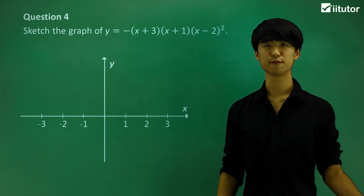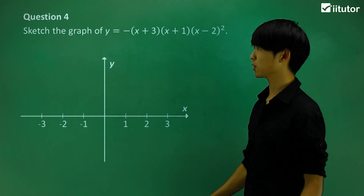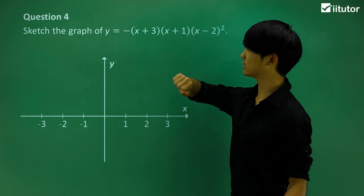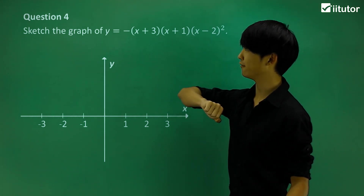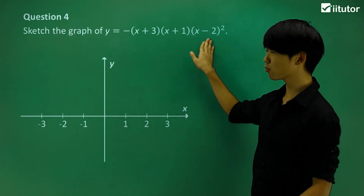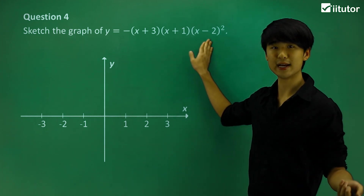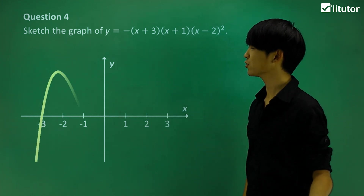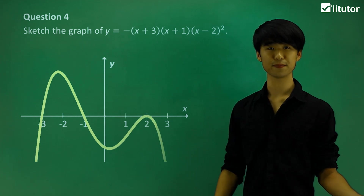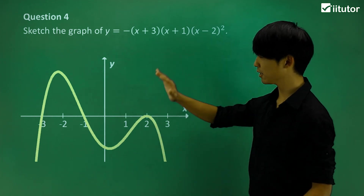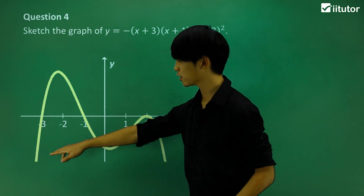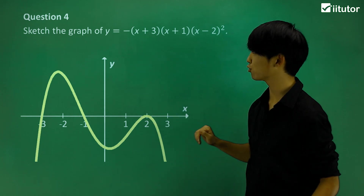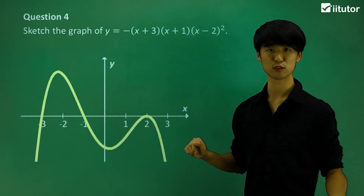Moving on to question 4, we have another double root and two single roots, but it's a negative quartic graph this time. The double root is at x equals 2. Graphing it: the curve is negative, passes through x equals negative 3, x equals negative 1, and bounces off at the double root at x equals 2.